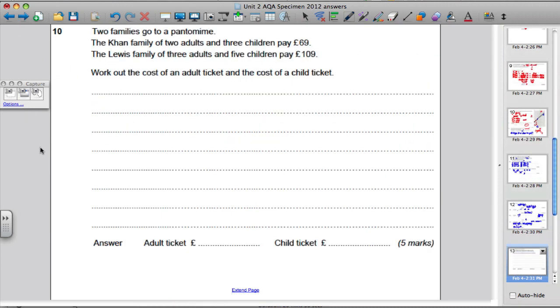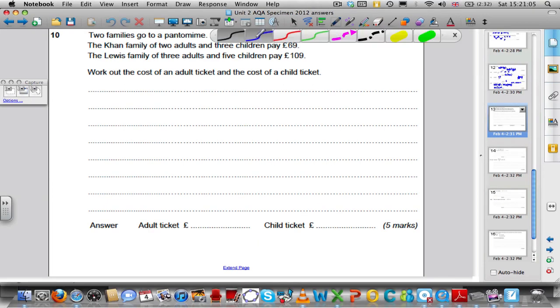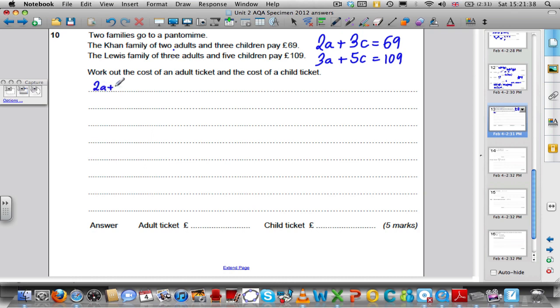OK, let's move on to question 10. It says that for the Kahn family of two adults and three children, the cost is £69. And that for the Lewis family, three adults and five children are £109. So this question simply boils down to solving two simultaneous equations for a, the cost of an adult, and c, the cost of a child. So start by writing our equations neatly. 2a plus 3c is equal to 69 equation 1. And 3a plus 5c is equal to 109 equation 2.